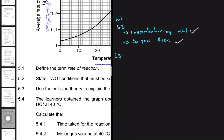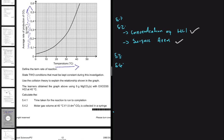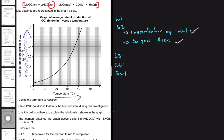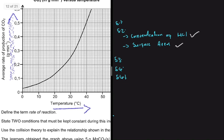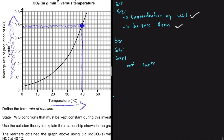Now for 5.4: the learners obtained the graph using 5 grams of MgCO3 with excess hydrochloric acid at 40 degrees Celsius. Question 5.4.1 asks for the time taken for the reaction to run to completion. At 40 degrees Celsius on the graph, the rate of reaction is approximately 0.5 grams per minute.